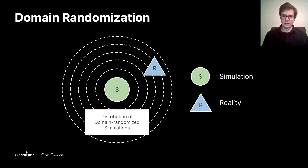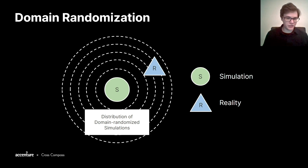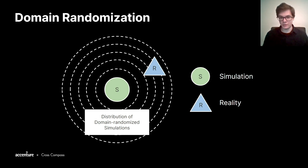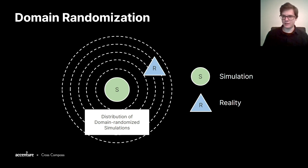Domain randomization is a technique to recreate noisy conditions in the simulated environment. With domain randomization, we are trying to capture reality in our distribution of domain randomized simulations. This has two positive effects: first, we don't have to calibrate our simulation as much as before; and second, we make the AI more robust to any environmental changes. Domain randomization can be used in several different aspects of simulation, like physical parameters or anything that can affect the scene. But since we only want to recreate a camera image in this demo, we will focus on visual domain randomization, or VDR for short.